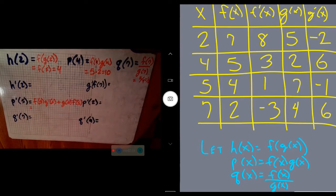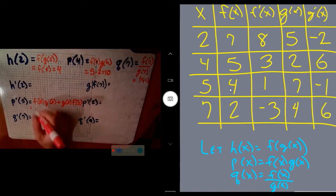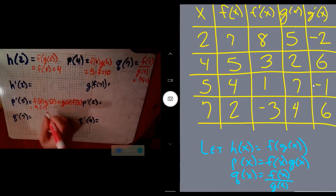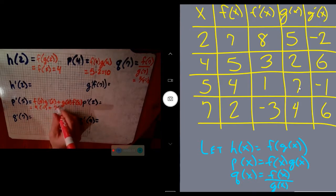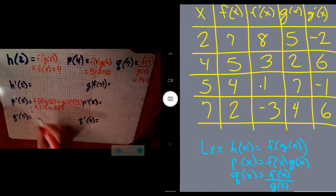f(5), as we go to our table, becomes 4. g'(5) becomes -1, so 4 times -1. Then we do g(5), which is 7, and f'(5), which is positive 1. So we get 4 times -1, which is -4, plus 7 times 1, which is 7. -4 plus 7 gives you positive 3.